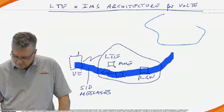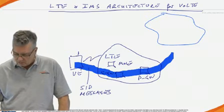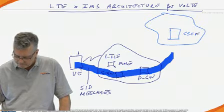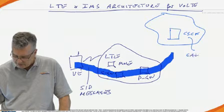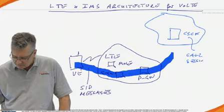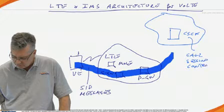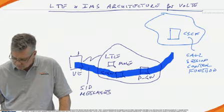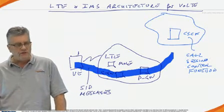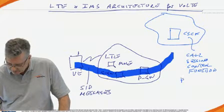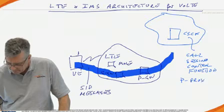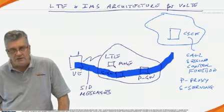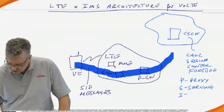In the IMS network, we are going to have a number of components, and one of the key components in the IMS network is something called the CSCF, the call session control function. And there are actually three different flavors of CSCF. There's something known as the P, or proxy, there's the S, or serving CSCF, and there's also the I, which is the interrogating.